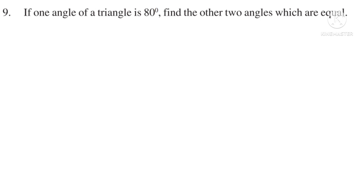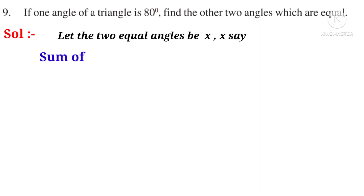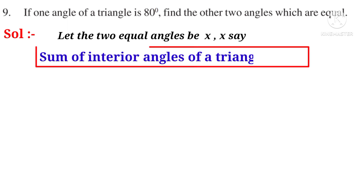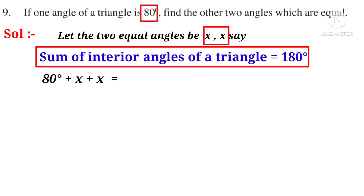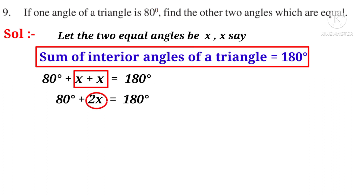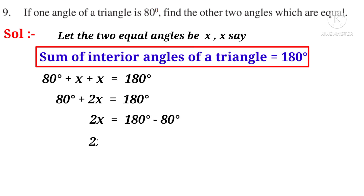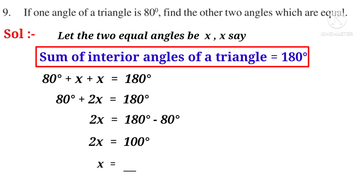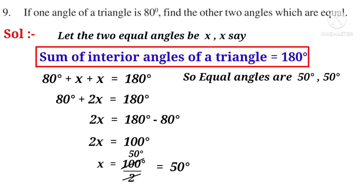Ninth problem: If one angle of a triangle is 80 degrees, find the other two equal angles. Solution: Let the two equal angles each be X. Since 80° + X + X = 180°, we get 2X = 100°, so X = 50°. The two equal angles are each 50 degrees.